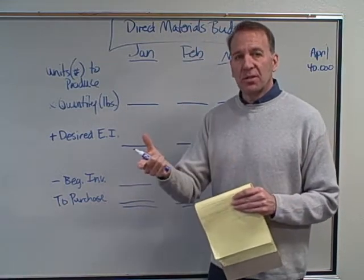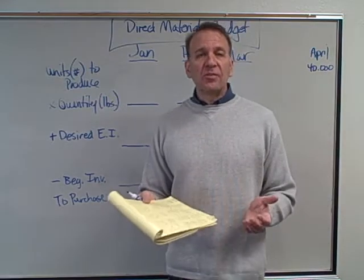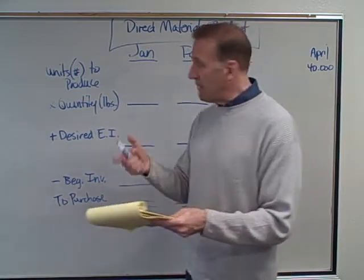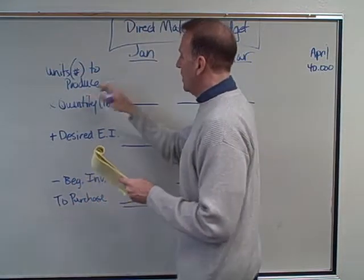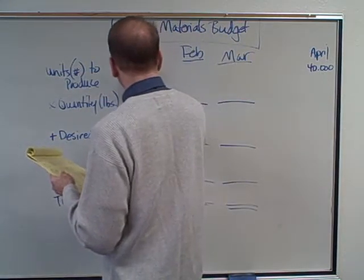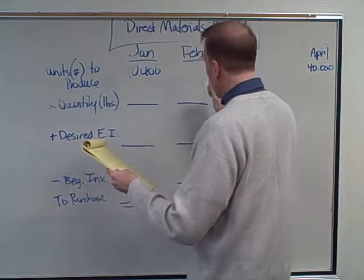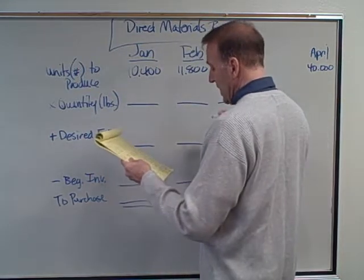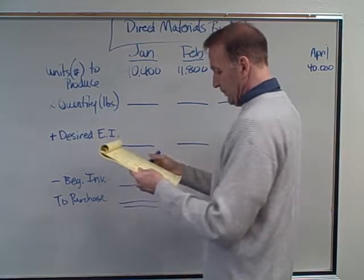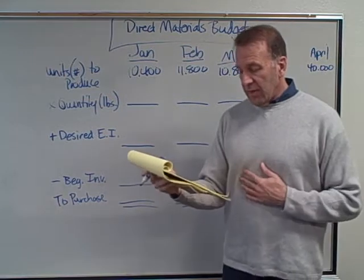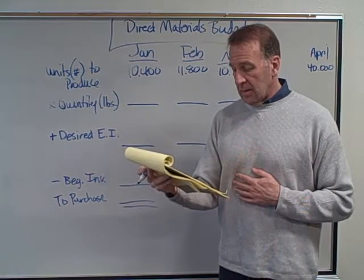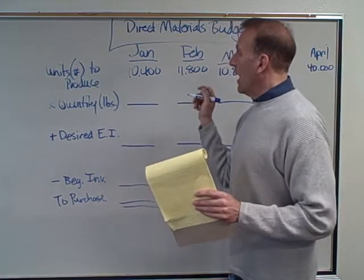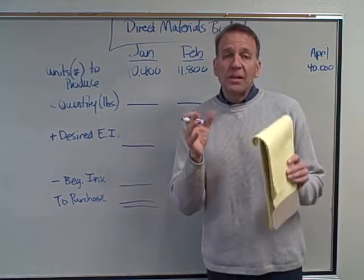We do the sales budget first, then the production budget. We're producing cases of salsa. In the production budget we calculated the number of cases we're going to produce: 10,400 in January, 11,800 in February, and 10,800 in March. Those are our production numbers for the salsa in cases.